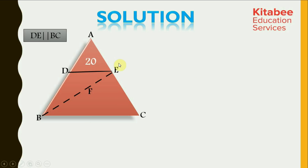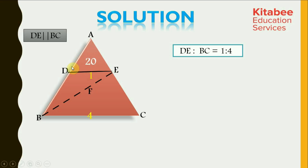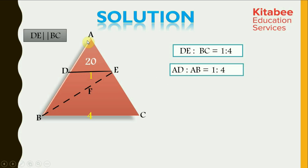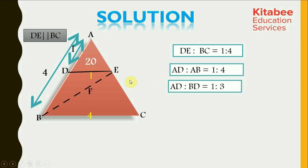Now, let's solve the second part, which asks us to find the area of triangle BDE. We know that DE and BC are in the ratio of 1 is to 4. Triangle ADE is similar to triangle ABC, so all sides are in the same ratio of 1 is to 4. So ADE to ABE should also be in the ratio of 1 is to 4. If ADE is one part and ABE is four parts, then BDE would be equal to 3 parts. Thus, ADE to BDE would be in the ratio of 1 is to 3.